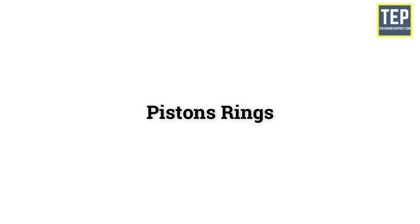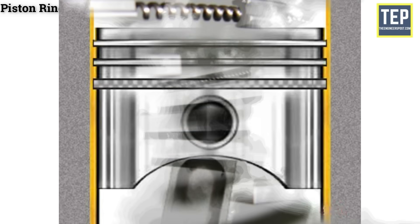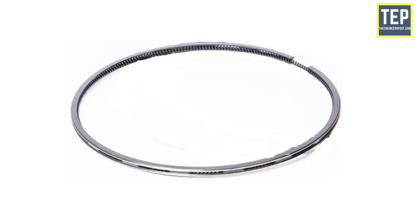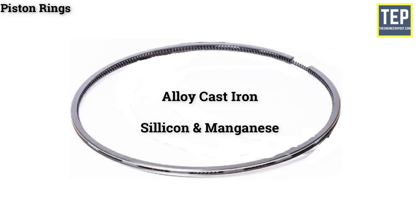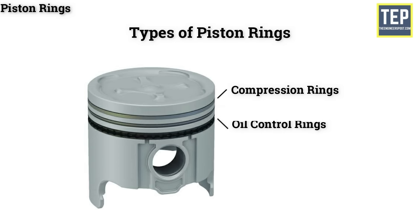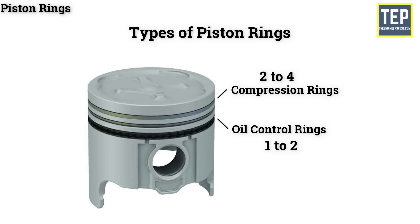Piston rings are fitted into grooves of the piston to maintain a good seal between the piston and the cylinder wall, preventing high pressure gases from the combustion chamber entering the crank case. They are made of fine-grained alloy cast iron containing silicon and manganese, with good heat and wear resisting qualities. There are two types: compression rings and oil control rings, with about two to four compression rings and one to two oil control rings used.